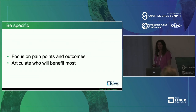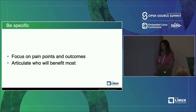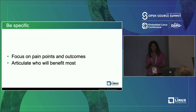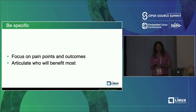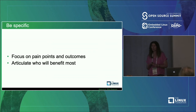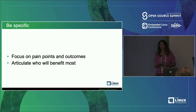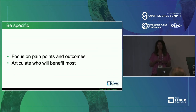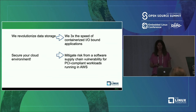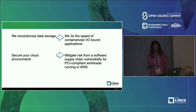The next thing is to be specific. Focus on pain points and outcomes, and articulate very clearly who is going to benefit the most. Be as specific as possible — in fact, err on the side of being too specific. Err on the side of forcing more people out than in, when in doubt. So I wanted to give you some examples of this that I have seen out in the wild.